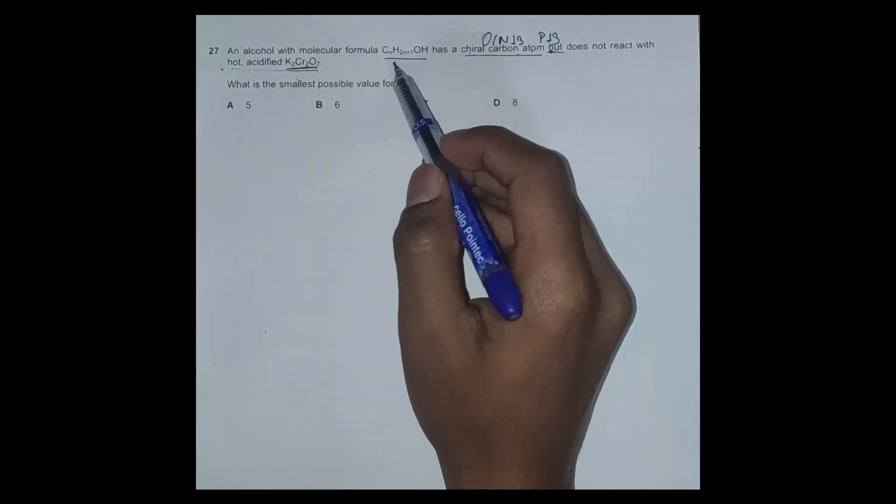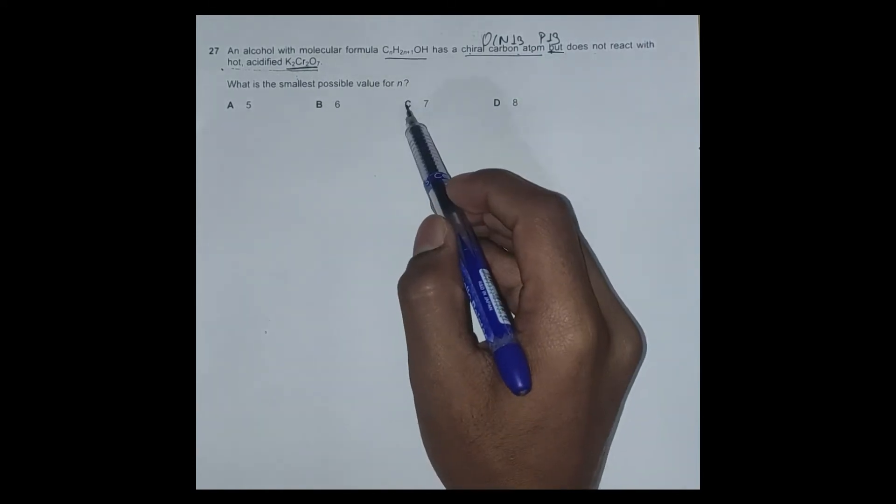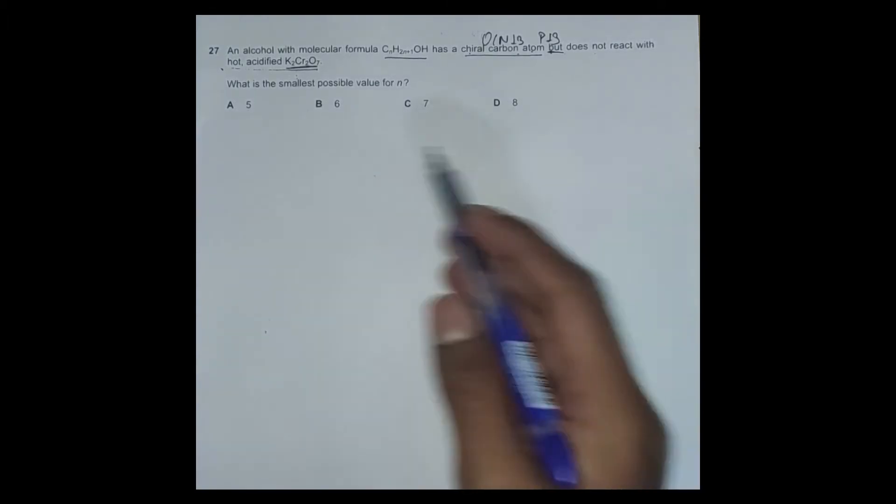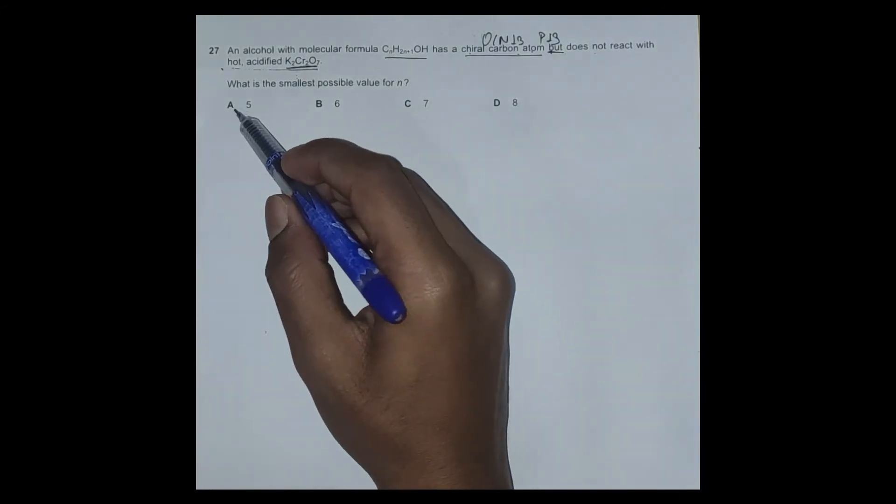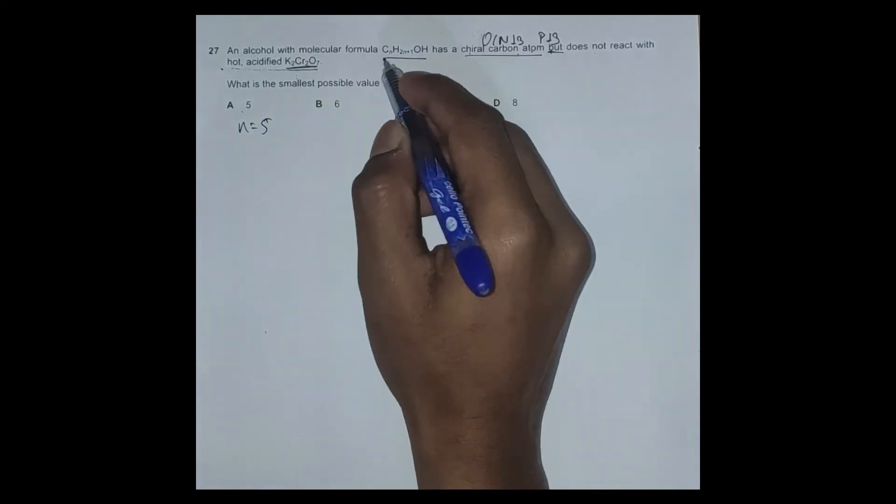To solve this question, we have to plug in the values. We could either look at option C first, B, D, or A, or we could look serially A, B, C, and D. Let's go A, B, C, and D.